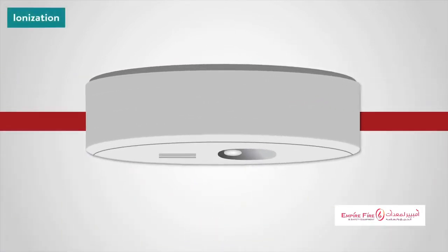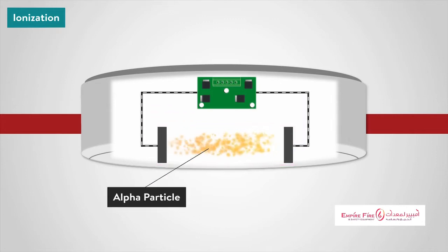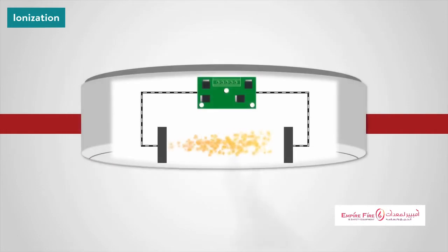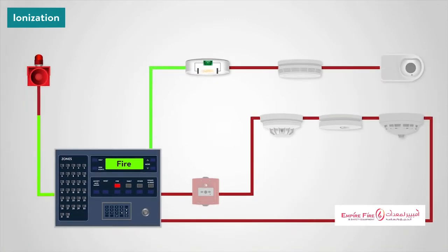An ionization smoke detector generally contains two chambers. The first is used as a reference to compensate for changes in ambient temperature, humidity, or pressure. The second chamber contains a radioactive source, usually alpha particle, which ionizes the air passing through the chamber where current flows between two electrodes. When smoke enters the chamber, the current flow decreases. The drop in current flow is used to initiate an alarm.